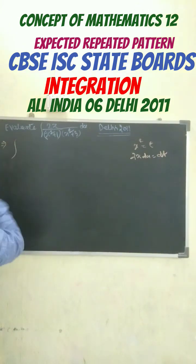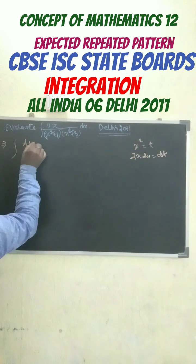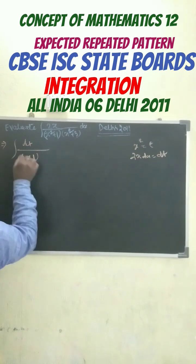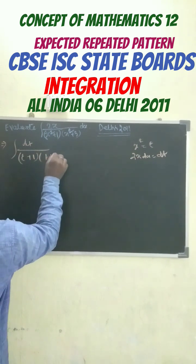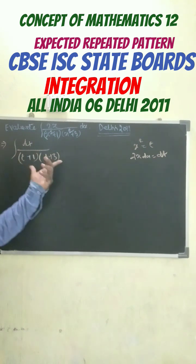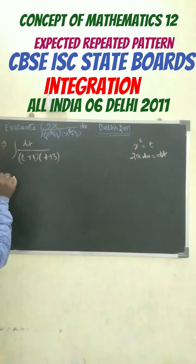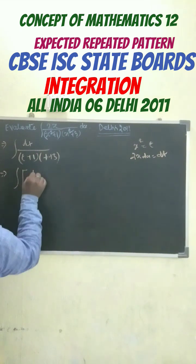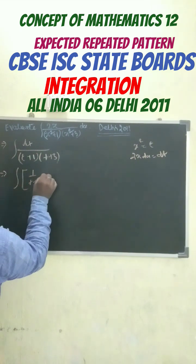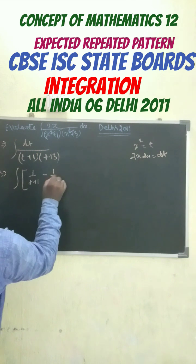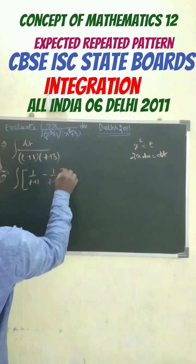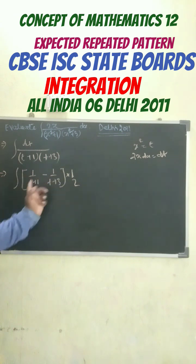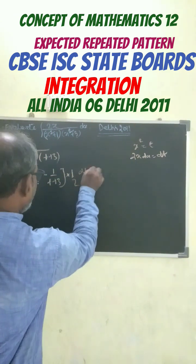Now this can be written as integration of dt by (t plus 1) into (t plus 3). Now we go with the partial fractions. This can be written as further integration of 1 by (t plus 1) minus 1 by (t plus 3), into half, because we are getting (t plus 3) minus (t plus 1), into dt.